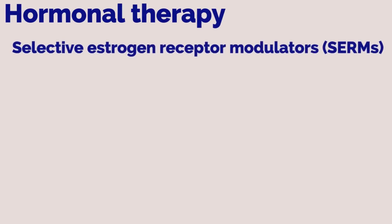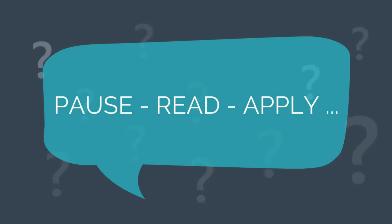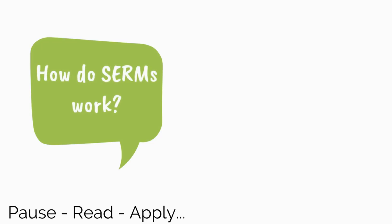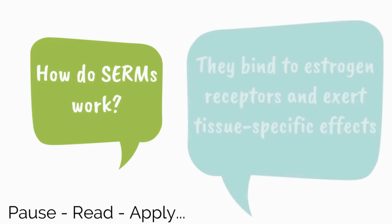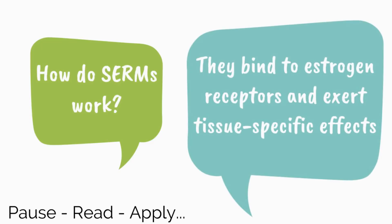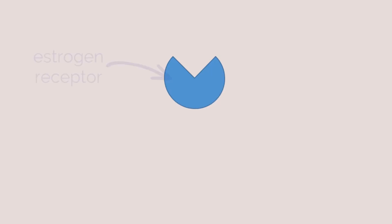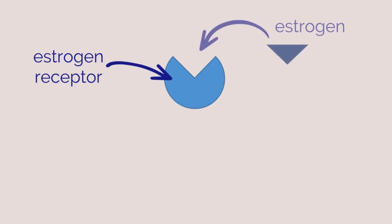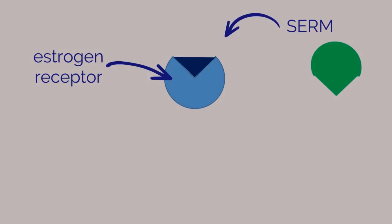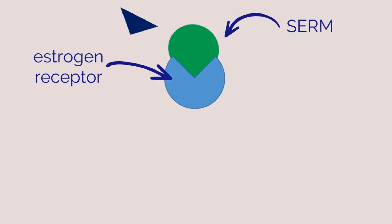Common hormonal therapies include selective estrogen receptor modulators (SERMs) and aromatase inhibitors. SERMs bind to estrogen receptors and exert tissue-specific effects. Shown here is the estrogen receptor with estrogen at its binding site. SERMs competitively bind at the receptors and have mixed agonist and antagonist activity depending on the target tissue.